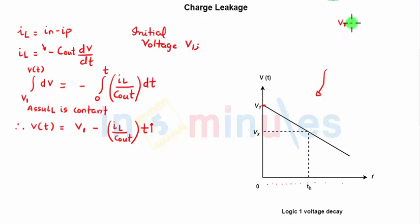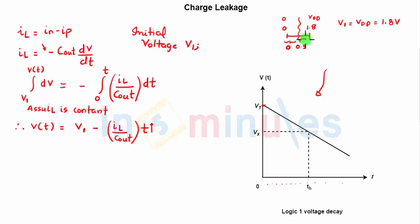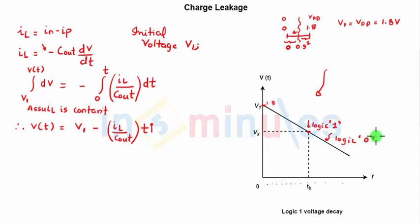Let's say the initial voltage was VDD or 1.8 V. We know that from 0 to roughly 0.9 V the logic is interpreted as 0, and above 0.9 V as logic high. As the voltage decreases linearly from 1.8 V, it will eventually fall below 0.9 V and be interpreted as logic 0. So the output has lost its value because of the leakage currents. The maximum time until the output holds the correct logic-high value is called the hold time, t_H.